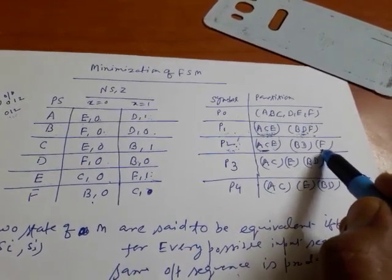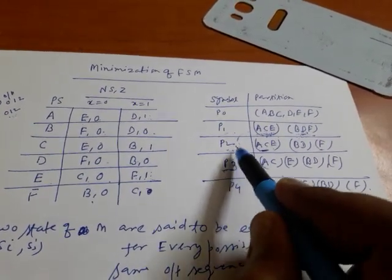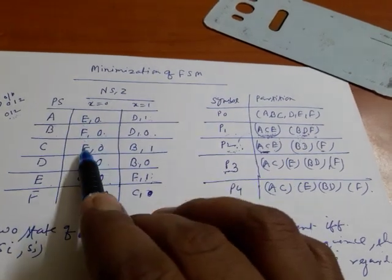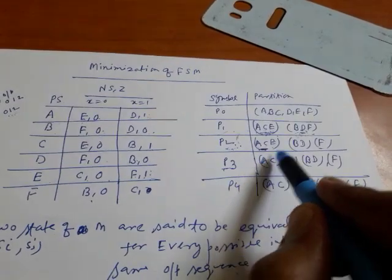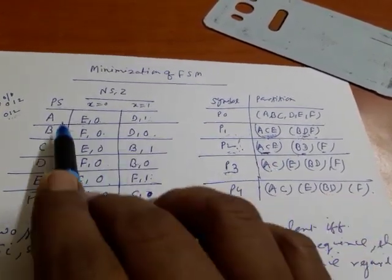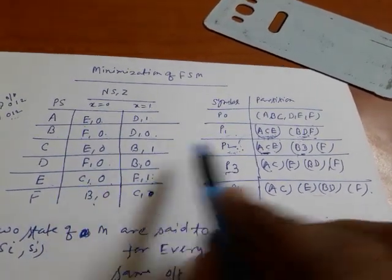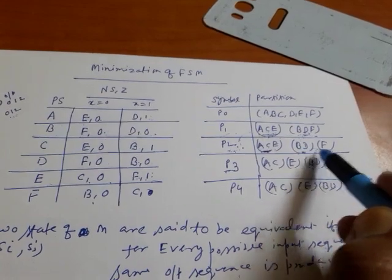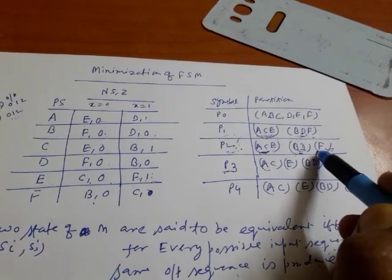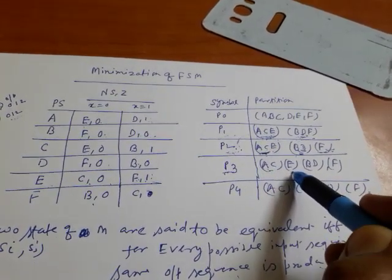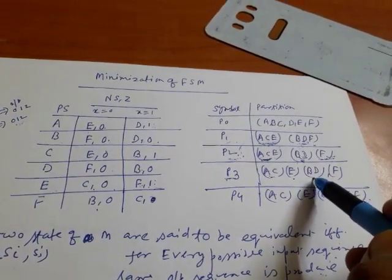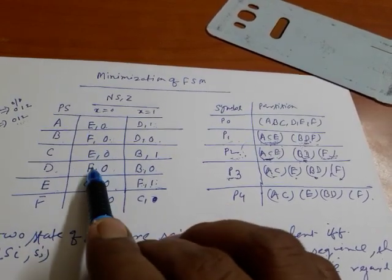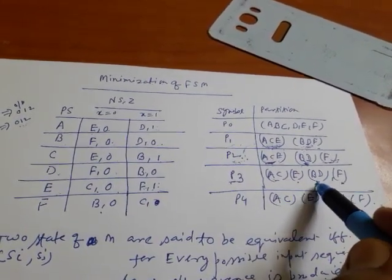Now for P3, we consider P2. Check a and c: for input 0 we get E — equivalent. For input 1 we get D or B, which are in the same set — no problem. Check a and e: E or C belongs to the same set. But for D and F: D belongs to one part and F belongs to a different set, so E is not equivalent with A. Check b and d similarly — d and b belong to the same set — no problem. F remains a single state, no need to check.